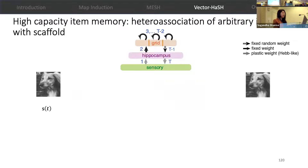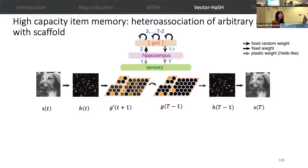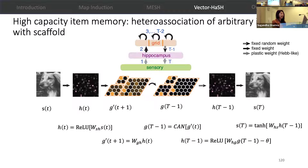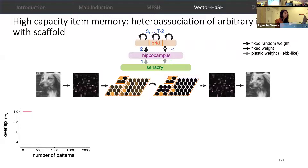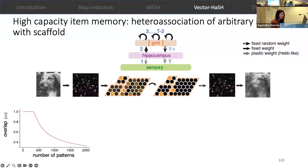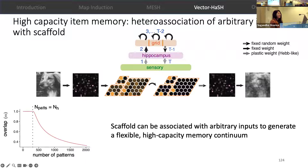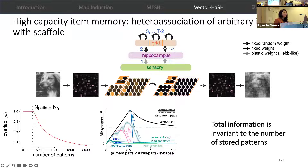This establishes that the entorhinal-hippocampal network creates a high-capacity robust scaffold with an exponentially large number of fixed points. Once we have the scaffold, we can store arbitrary information into this network by simply linking arbitrary sensory inputs to the scaffold, and given any stored sensory inputs, we can reconstruct them using internal network dynamics. We find that for patterns up to the order of the number of hippocampal cells, VectorHash acts as a perfect associative memory. With increasingly large numbers of stored items, pattern recall degrades, but only very smoothly. This establishes that the scaffold can be associated with arbitrary inputs to generate a flexible high-capacity memory continuum similar to MESH, with total information invariant to the number of stored patterns.